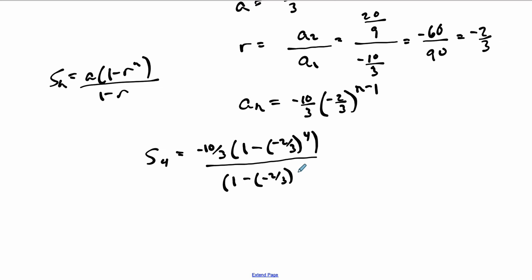It's going to tell me that you take negative 10 over 3 times 1 minus r, so negative 2 thirds to the fourth. This number and this number are going to be matching, n and n matching, over 1 minus negative 2 thirds. That's kind of a mess. And my claim, as I said before, is that you could write it like this as well and get the same thing. Put the negative 10 thirds in the front and then multiply it by this is 1 plus 2 thirds. And then this is 1 minus, this is going to be 1 minus negative 2 to the fourth is 16 and 3 to the fourth is 81, so 16 over 81.